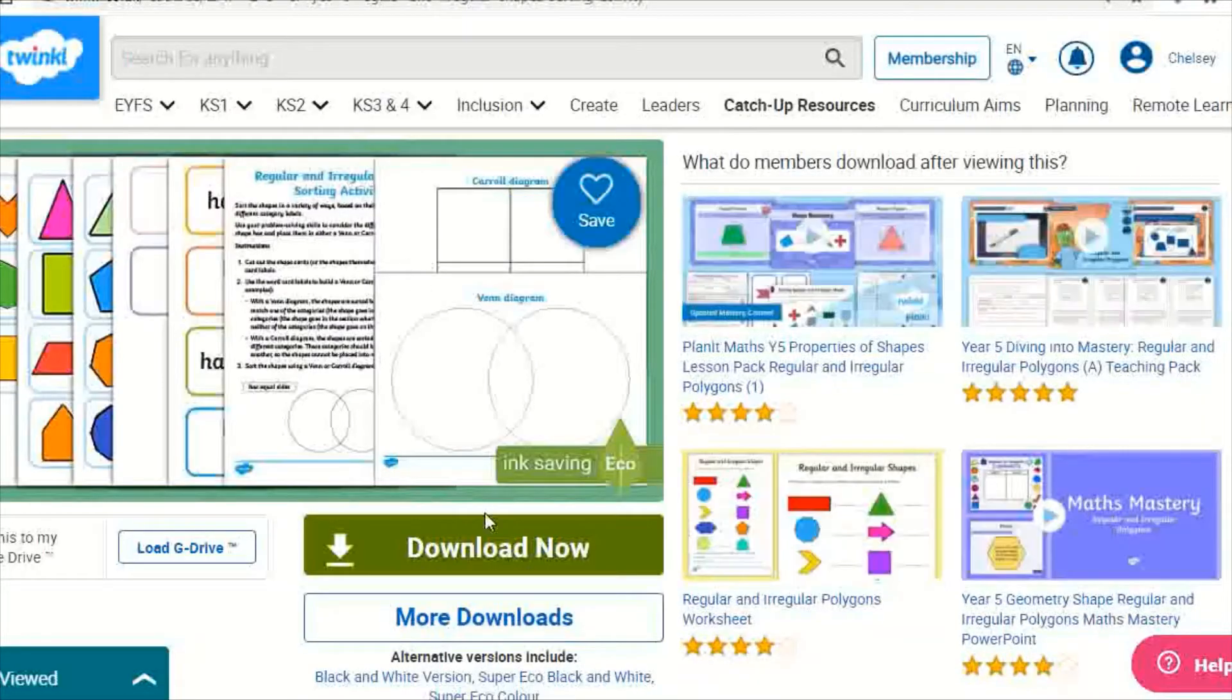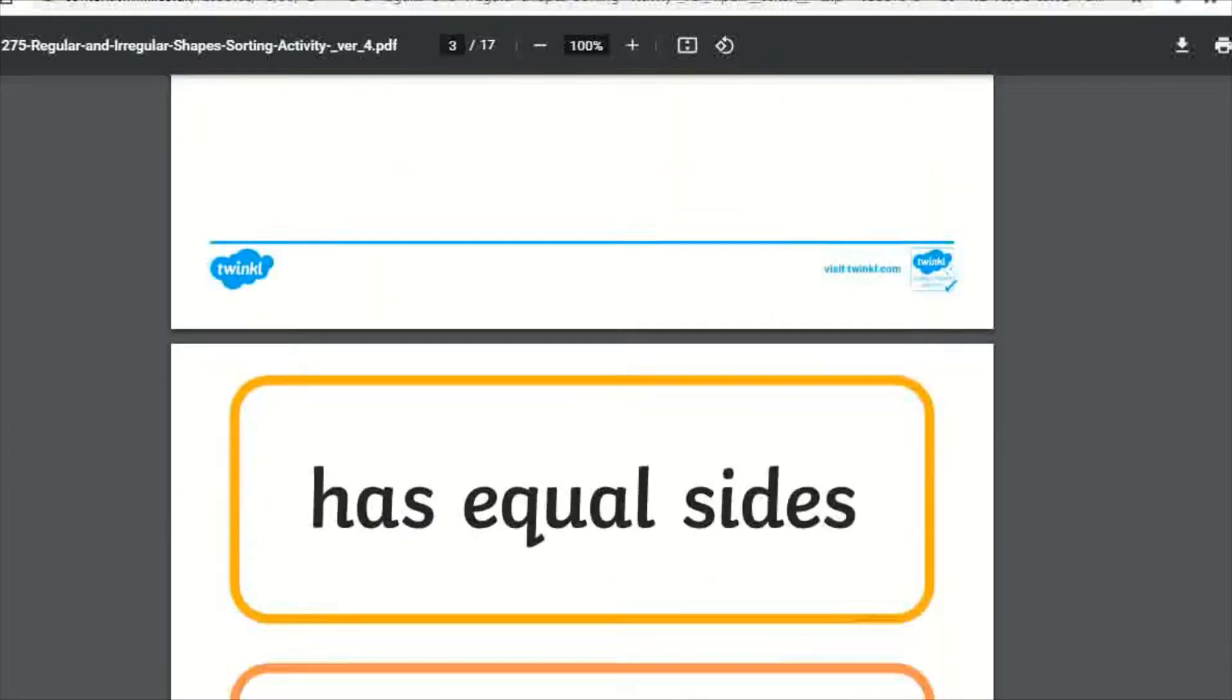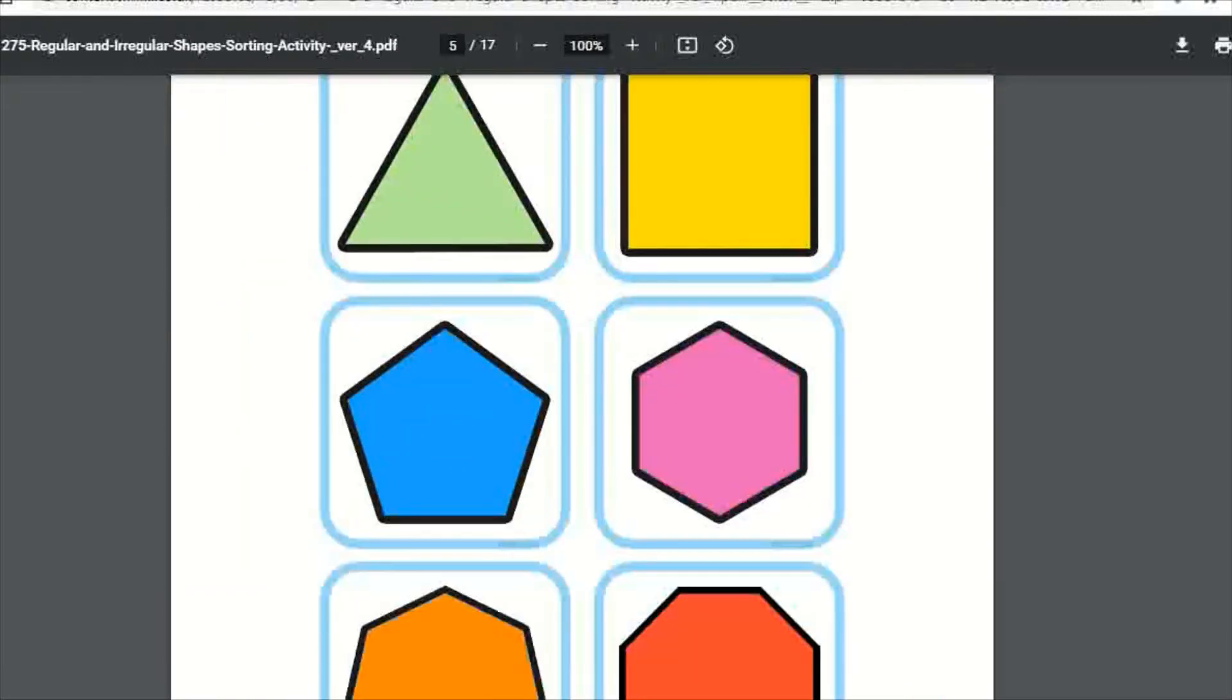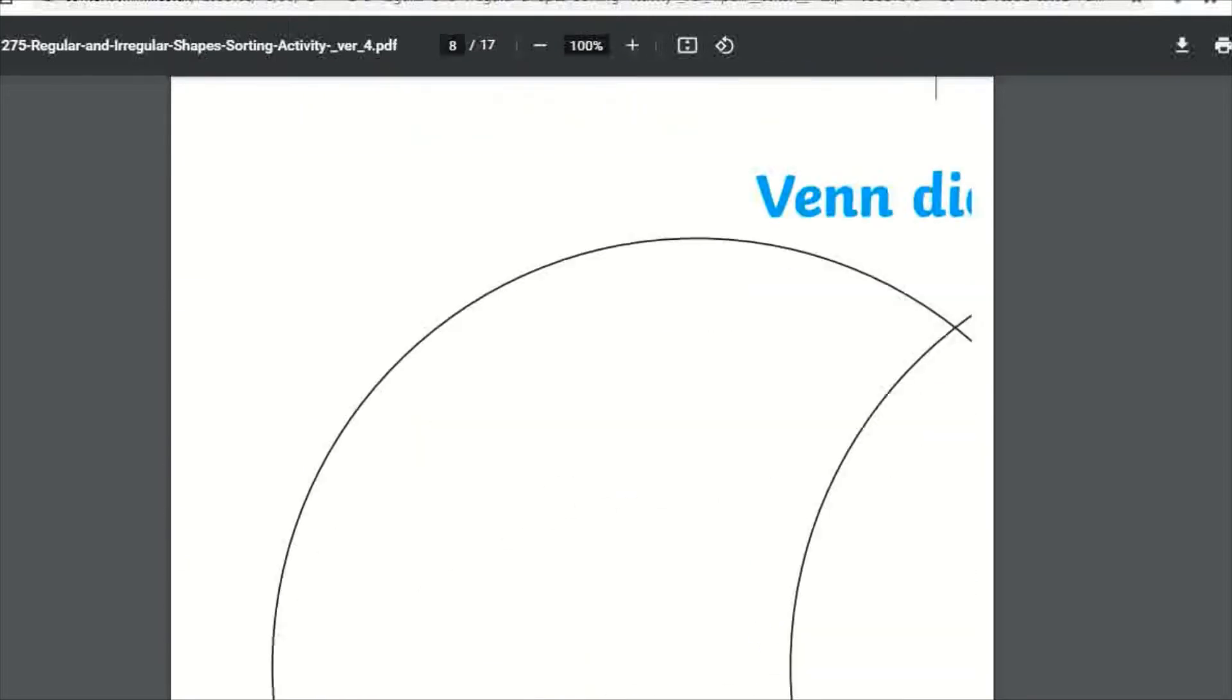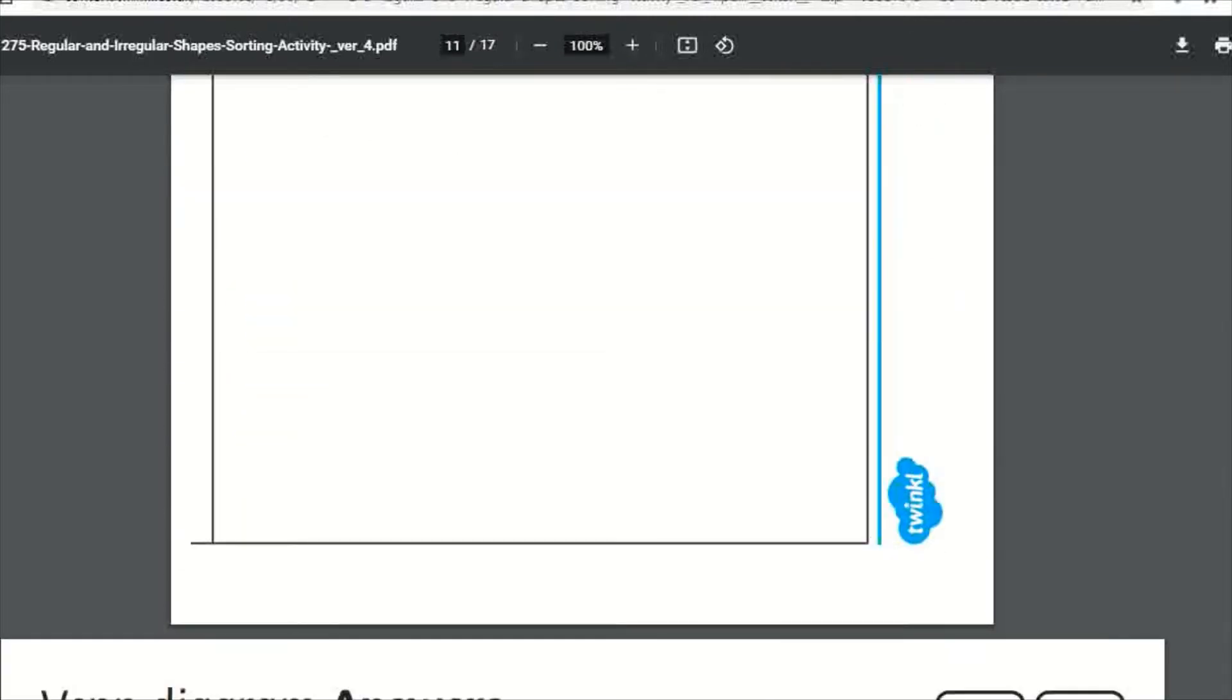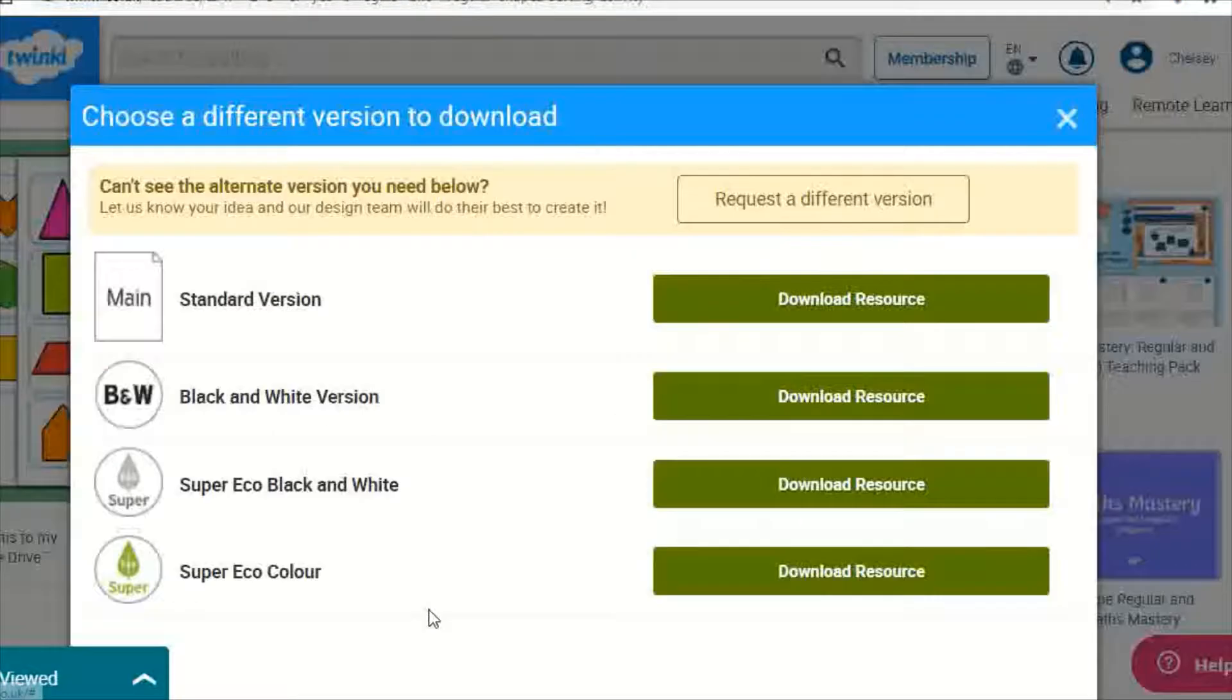The resource includes instructions, headings, and a collection of regular and irregular shapes to sort. There are also large-scale printables of a Venn diagram and Carroll diagram, and answers are included. There are also alternative versions of the resource, so you can choose the correct format for your learners and printers.